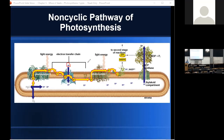As the electron goes from component to component in the electron transport chain, it goes to lower and lower energy levels. Some of this energy is captured by the cell to do work — specifically, pumping a proton from the stroma into the thylakoid compartment, building up a proton concentration gradient. At photosystem one, a photon of light is captured and bounces between chlorophyll molecules until it reaches the reaction center P700. Two electrons are excited, and replacement electrons come from the electron transport chain of photosystem two. These high-energy electrons reduce NADP to NADPH.